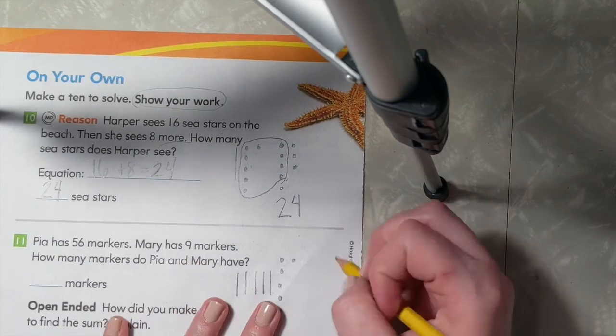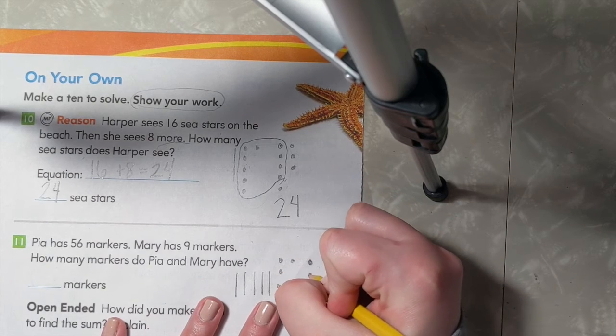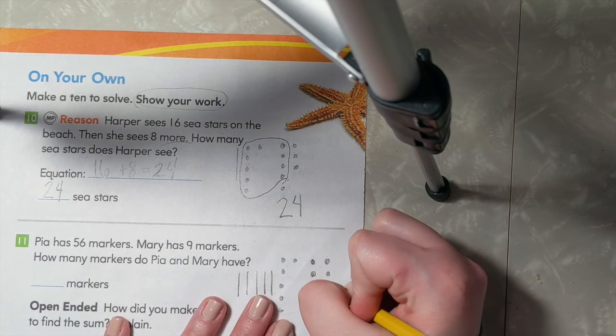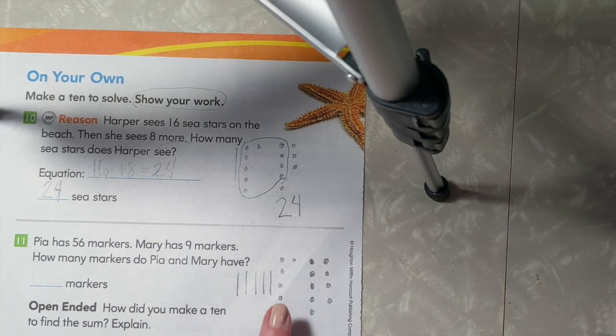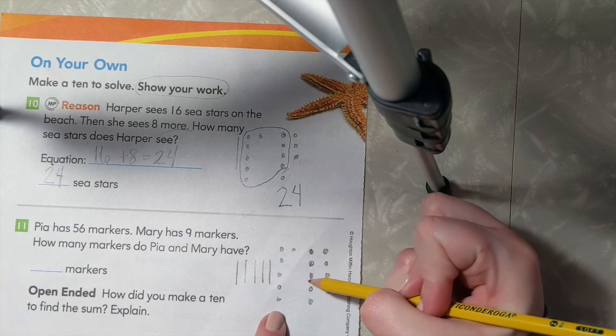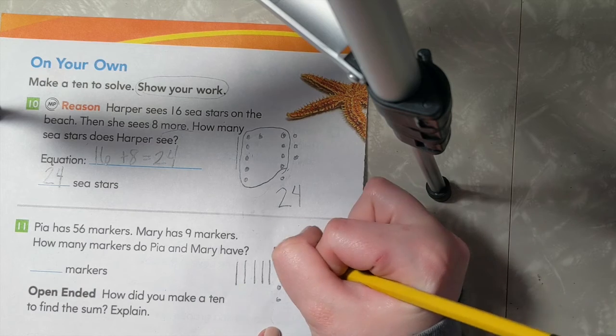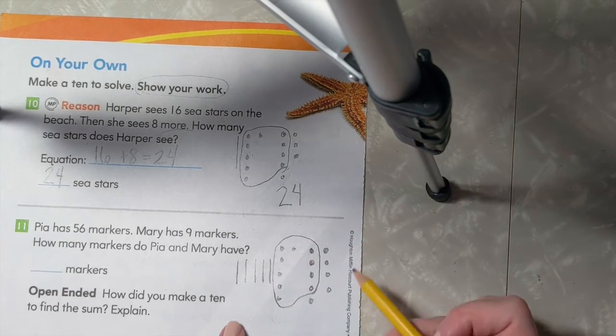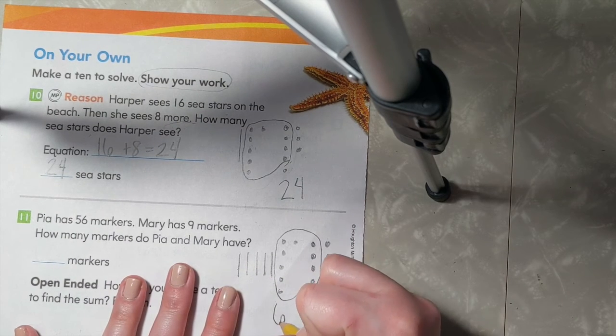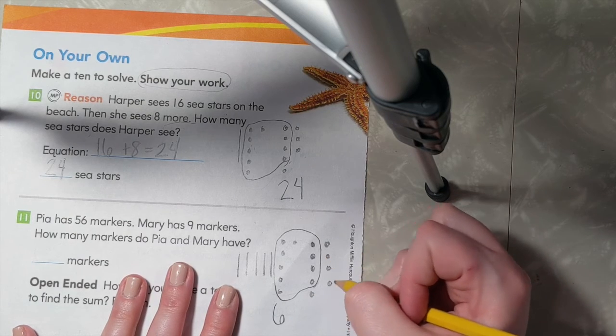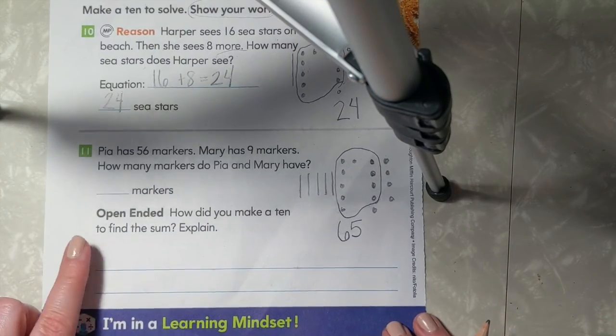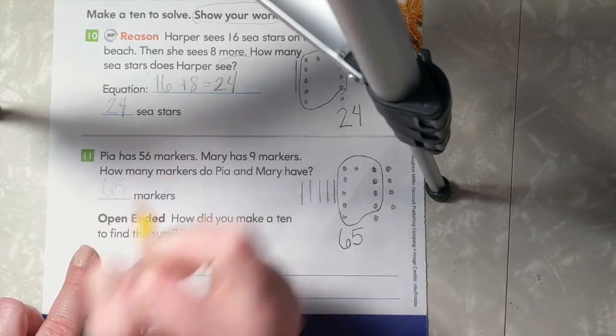Mary has 9. So let's draw 9 more 1s: 1, 2, 3, 4, 5, 6, 7, 8, 9. Let's count on from our 6 to make a group of 10: 6, 7, 8, 9, 10. 6 plus 4 equals 10. So now I have 1, 2, 3, 4, 5, 6 groups of 10 to make 60, and 1, 2, 3, 4, 5 ones to make 65. So all together, the girls have 65 markers.